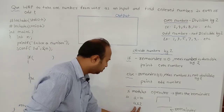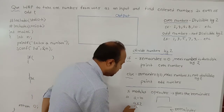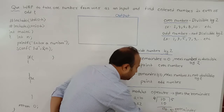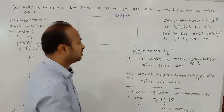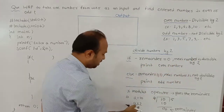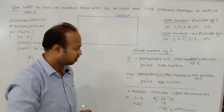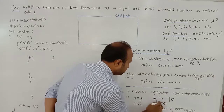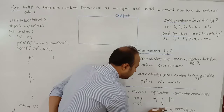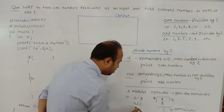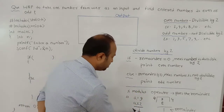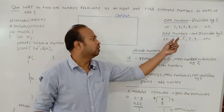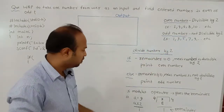The meaning of this expression is we divide the value of a by 2 — that is, we divide 10 by 2 — and we get the remainder 0. If we get remainder 0, the number is divisible by 2, so the number is even. And suppose we write 9 modulus 2 — we divide 9 by 2 and get remainder 1. If the remainder is 1, it is not equal to 0, meaning the number is not divisible by 2 and is an odd number, so we print odd number.